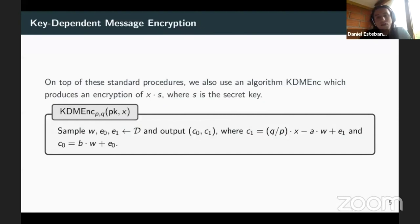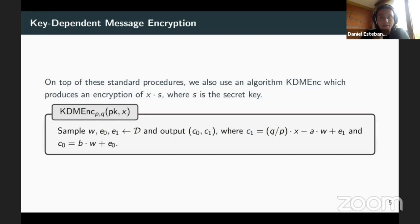There is another important property of this encryption scheme: you can obtain an encryption of any plaintext times the secret key without ever knowing the secret key. This is done by defining C1 and C0 similarly to before, except that Q divided by P times X is added to C1 instead of C0. Because decryption multiplies S to C1, you end up with an encryption of S times X — a very important property we will use in a moment.